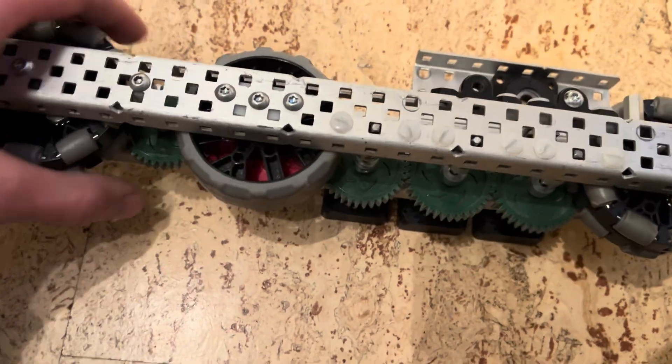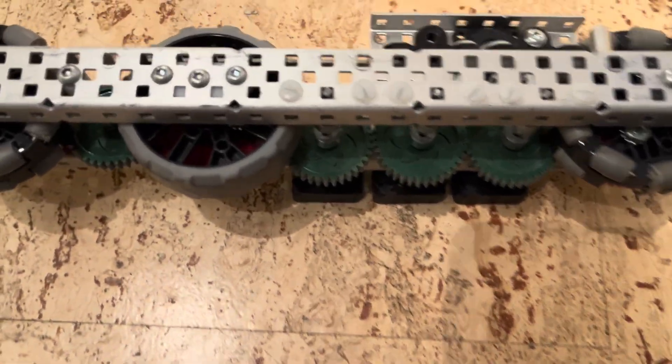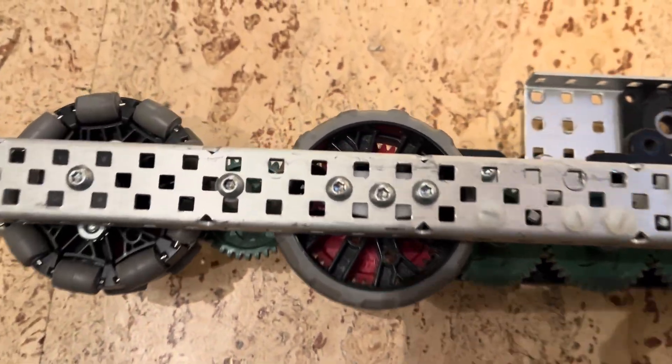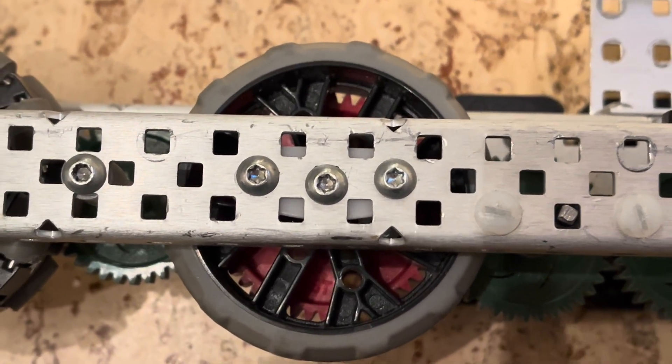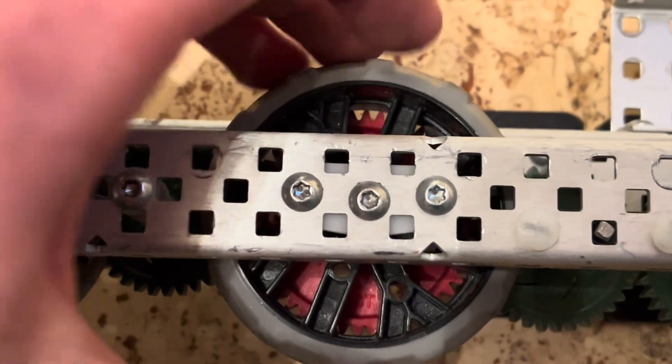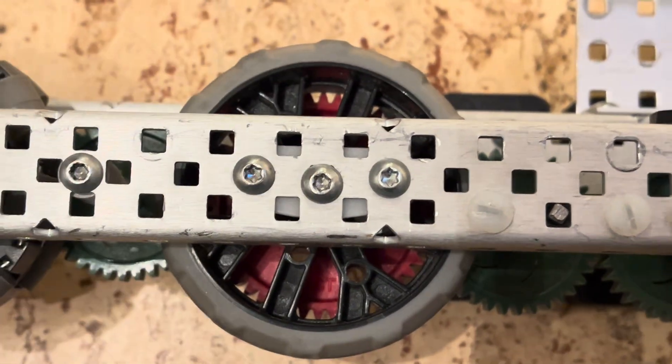Another unique thing we've done on all of our robots this season actually is a dropped center traction wheel and we're able to achieve that with these custom gussets here. That just drops the center wheel by a 16th of an inch.